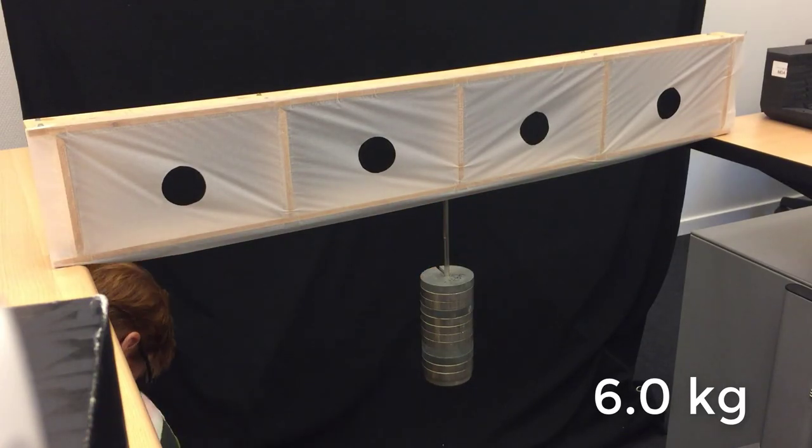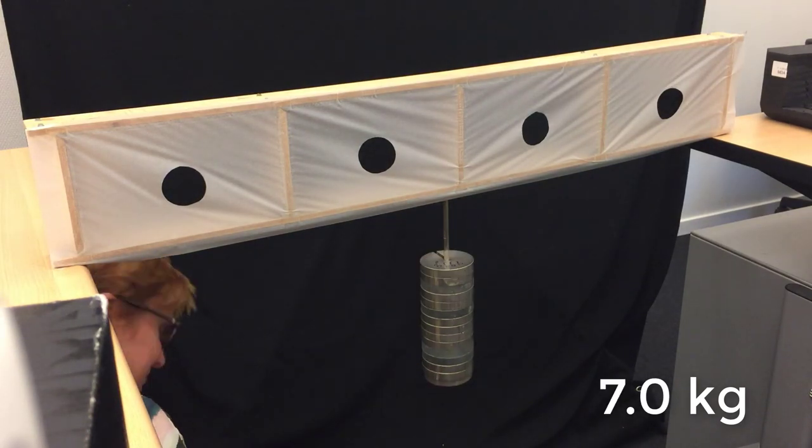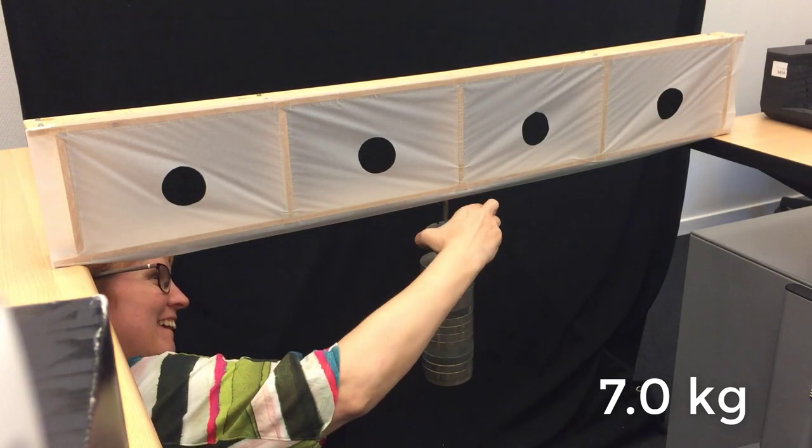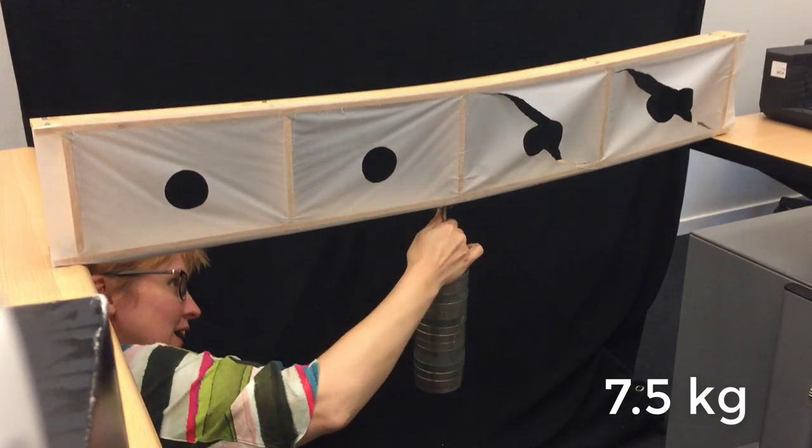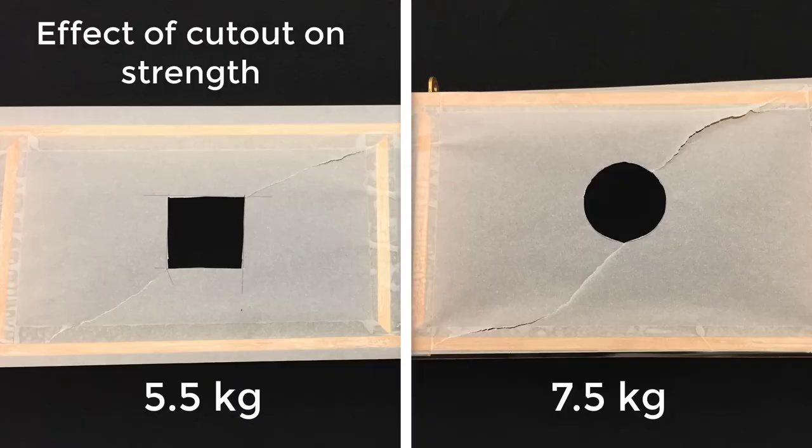Now the diagonal lines are starting to deform more dramatically, and the holes start to look less circular. Finally, just as a weight is being put onto the stack, the paper fails catastrophically, and we were able to put on 7.5 kg.